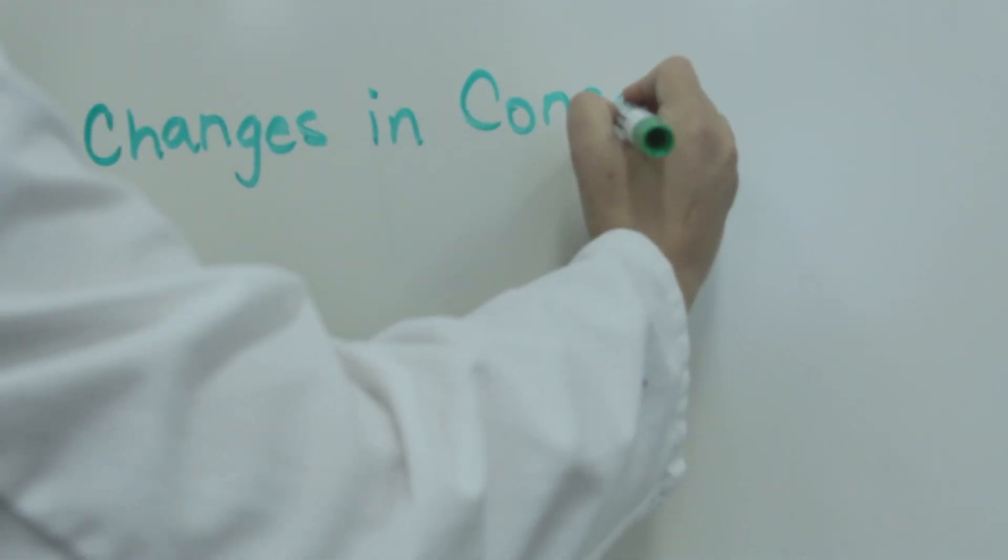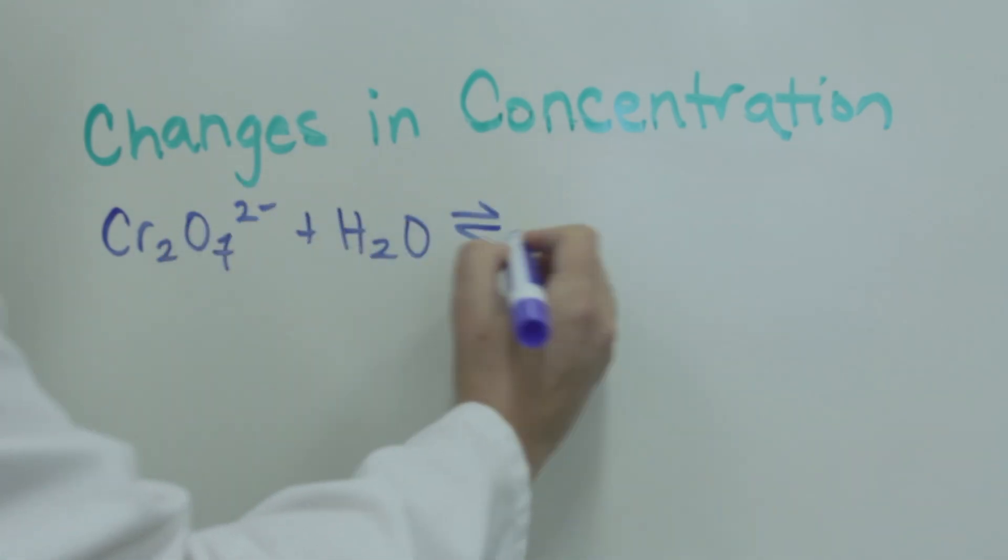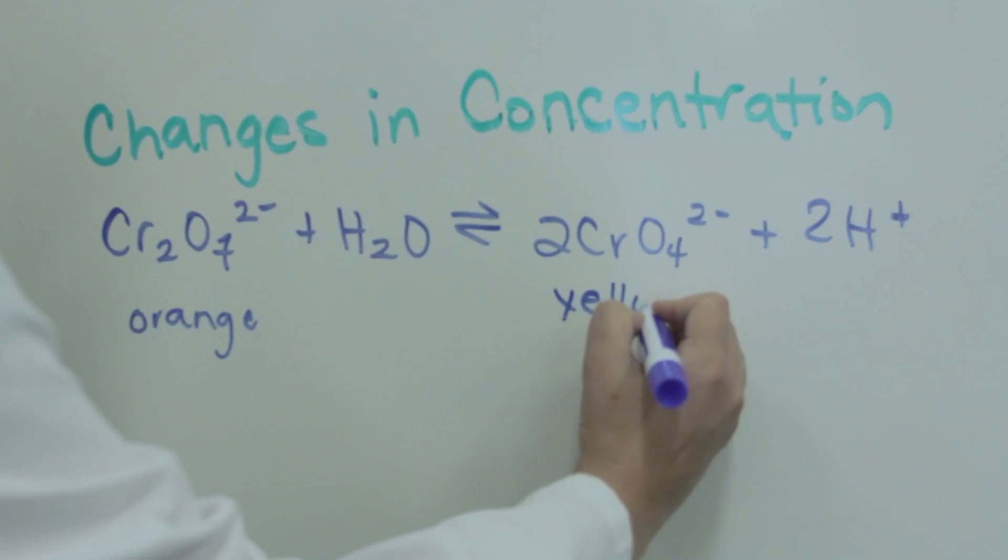First we'll observe the effect of changing the concentration on the equilibrium. The equilibrium that we'll study is one of dichromate in equilibrium with chromate ions. Dichromate is orange in solution while chromate is yellow.